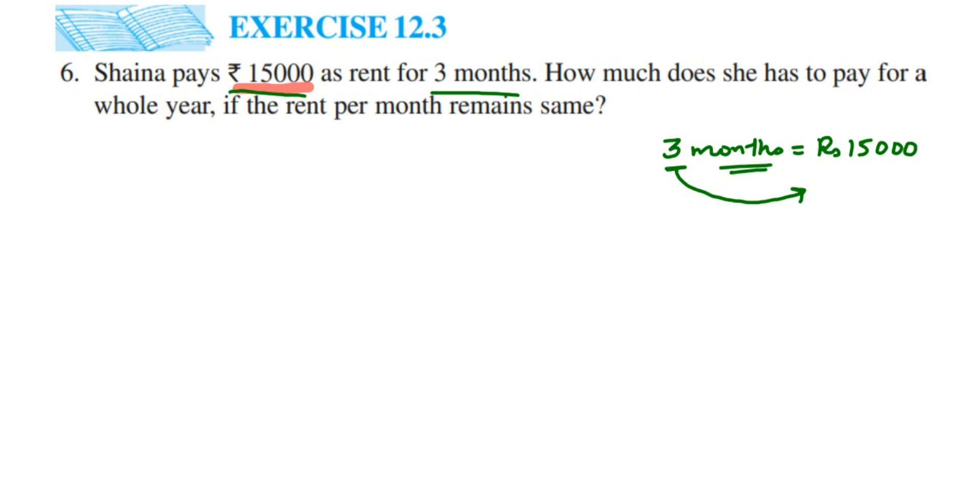Here also it goes to division. So one month will be equal to rupees 15,000 divided by 3. You can cancel this: 3 fives are 15, so we have three zeros. We get 5,000. So for one month she's paying 5,000 rupees as rent.